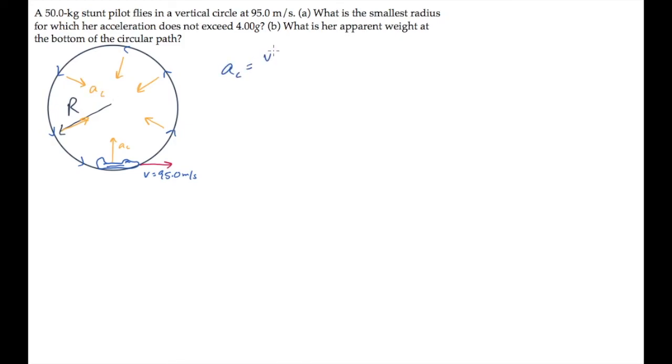We're asked in part a to find the smallest radius for which the pilot's acceleration does not exceed 4 g's. We can solve this by noticing that when v, the speed, is constant, the acceleration increases as the circle's radius decreases.